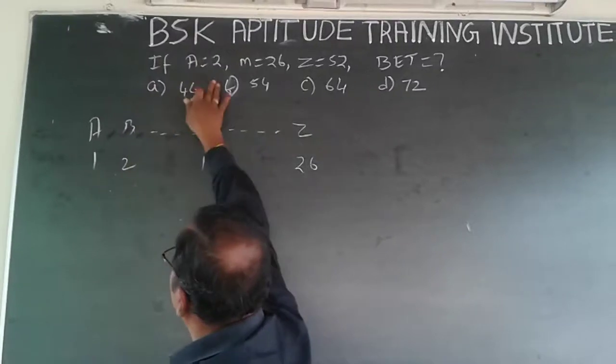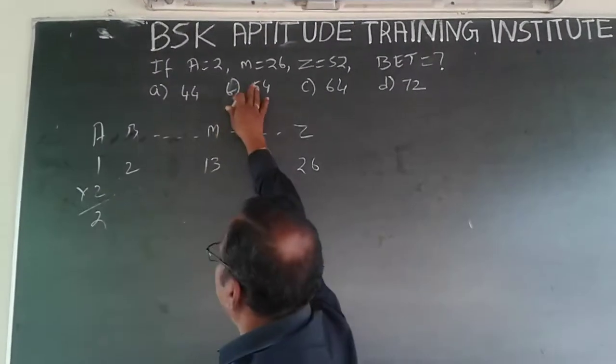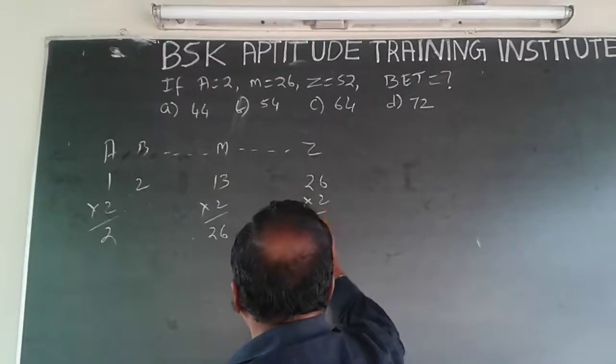So here 1 is given as 2 means this is getting multiplied by 2. So the same thing is happening for M, so M is 13 into 2 is 26 and Z is 26 into 2 is 52.